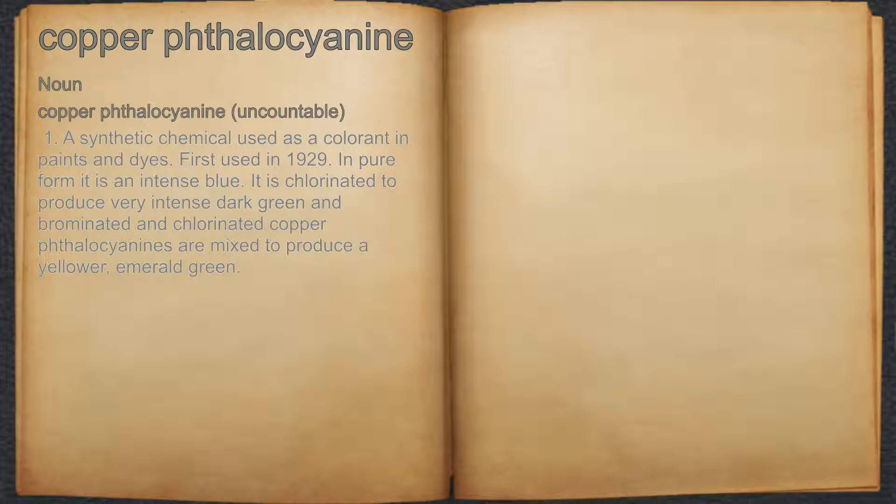It is chlorinated to produce very intense dark green, and brominated and chlorinated copper phthalocyanines are mixed to produce a yellow or emerald green.